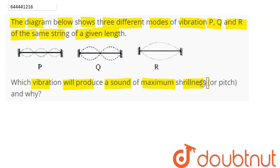So we know by the relation v equal to f lambda. Since velocity is same in all the cases, hence frequency is inversely proportional to lambda.